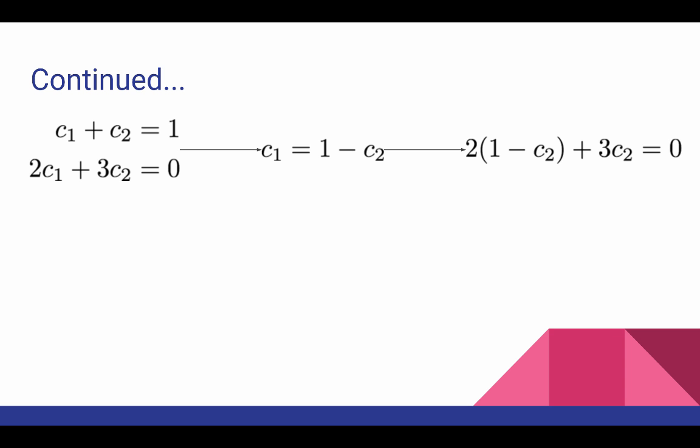and then solving for the remaining variable. That gives me c2 equals negative two. If I plug that back into the other equation, I'm going to get c1 equals three.